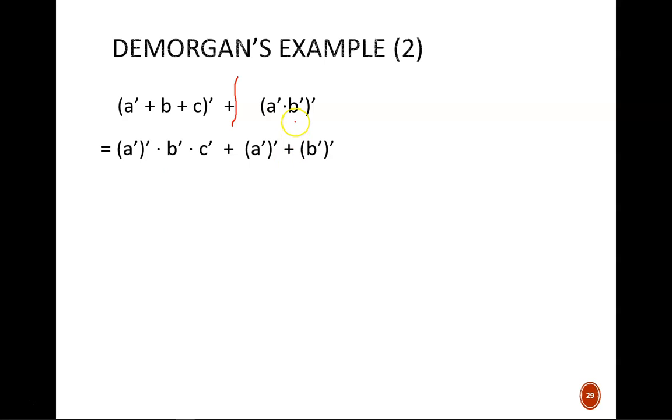On the right side, A prime becomes A prime prime, B prime becomes B prime prime, the AND operator becomes an OR. We are done with DeMorgan's Theorems now.